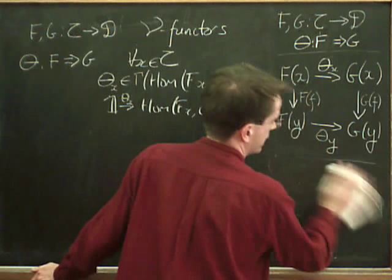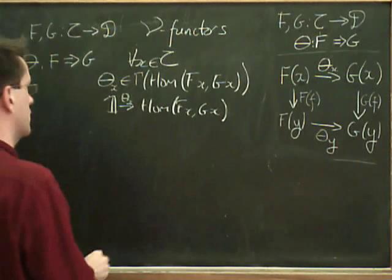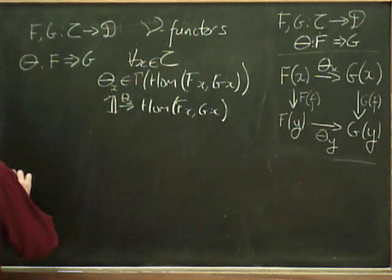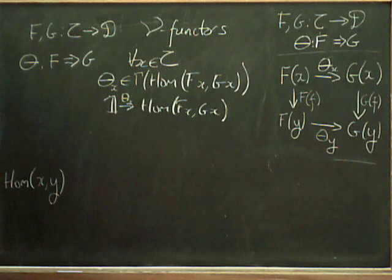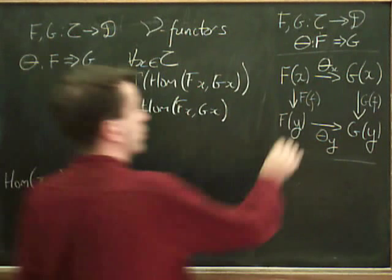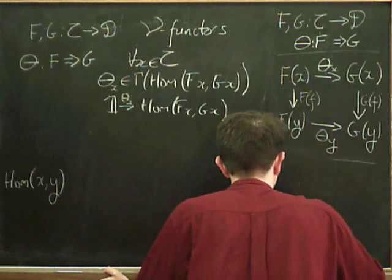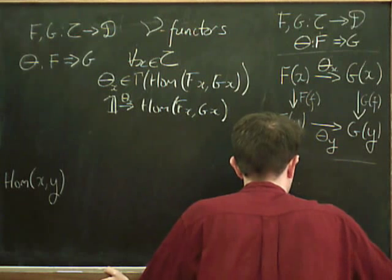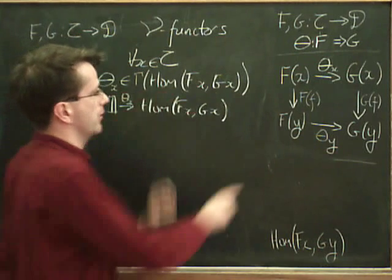So this is actually something which sends HOM from X to Y to HOM from F of X to G of Y. So let me write this down. So we can write down this naturality square in a slightly different way. So if we start with something HOM from X to Y, that's our F. If we start with our F in there, we want to end up with something from HOM from F of X to G of Y. And the idea is there's two ways, using theta and F,